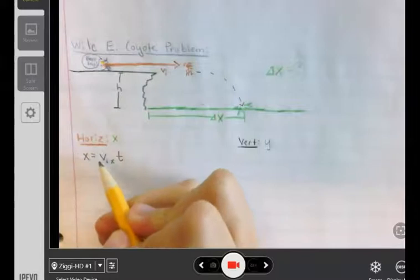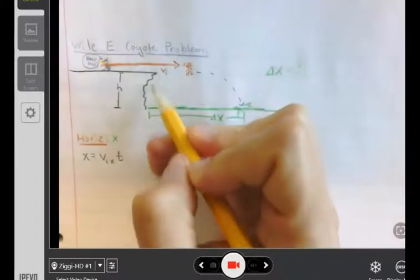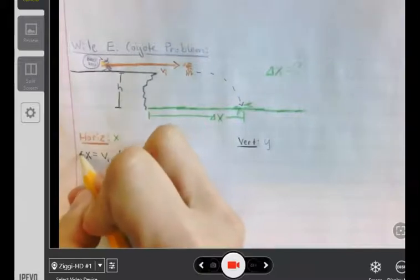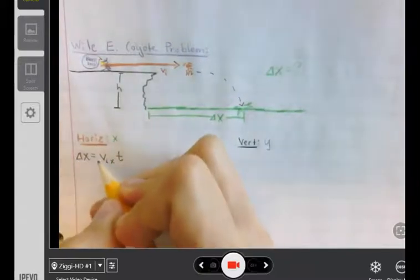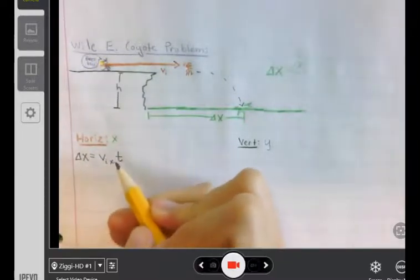You can say X final and start at a certain X initial or you can just start at the location that you want to and say change in displacement. It's not wrong to do it the other way, but I find this way a little bit shorter.